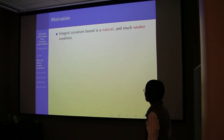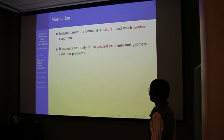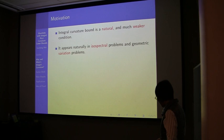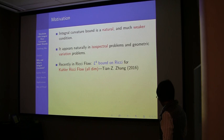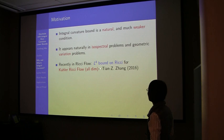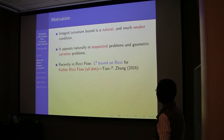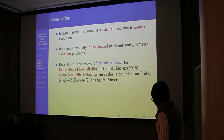As Robin mentioned, it appears in the Chern-Gauss-Bonnet formula and also in isospectral problems and variational problems — we see integral curvature related to other quantities. Recently I got interested in this also in Ricci flow: if you look at Kähler-Ricci flow, then it always has an L4 bound on the Ricci tensor automatically. This is Tian and Sun's work from 2016, and this has been extended to four-dimensional Ricci flow if you assume scalar curvature is bounded.